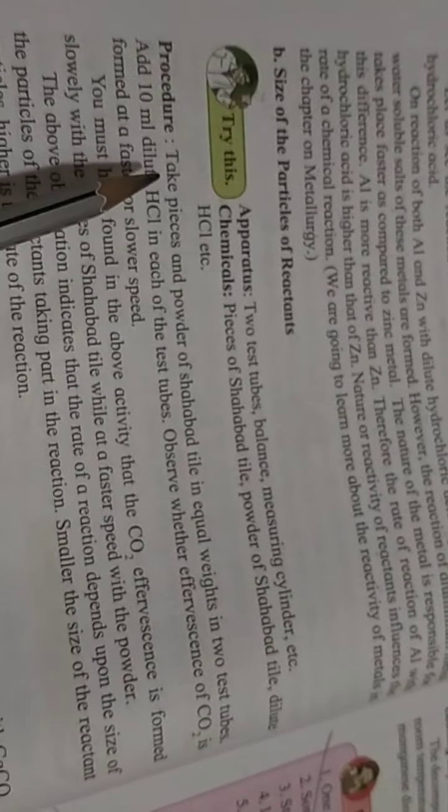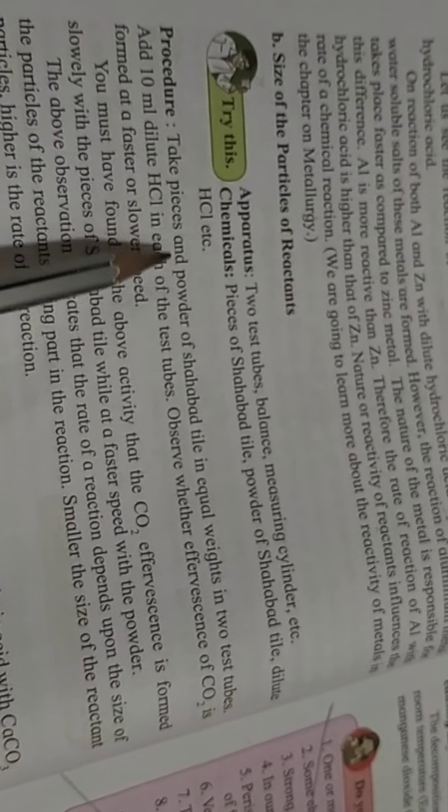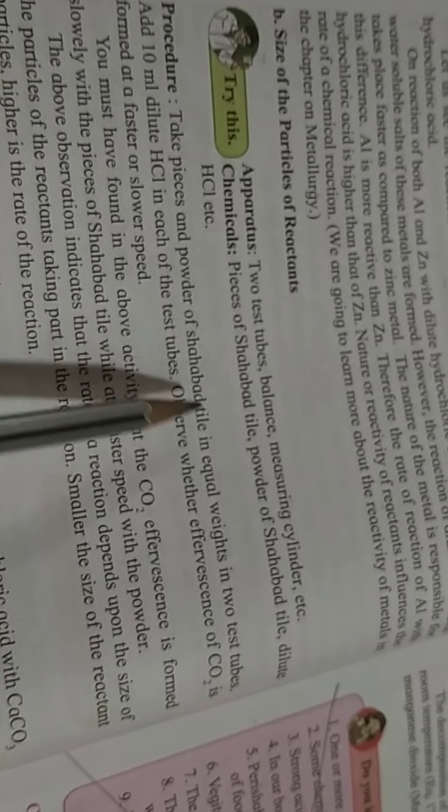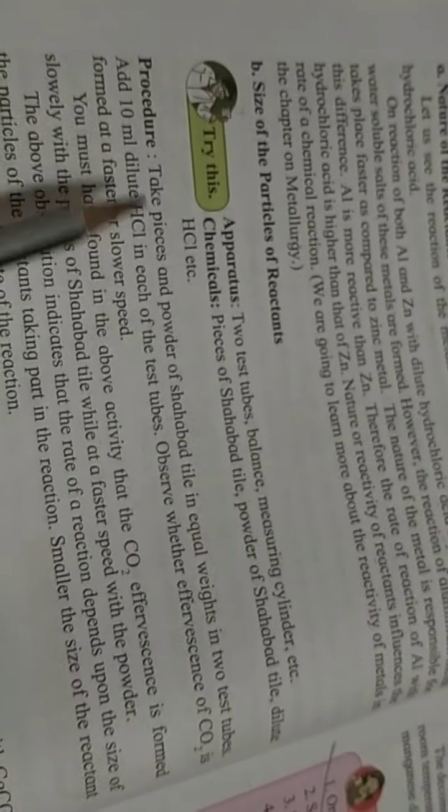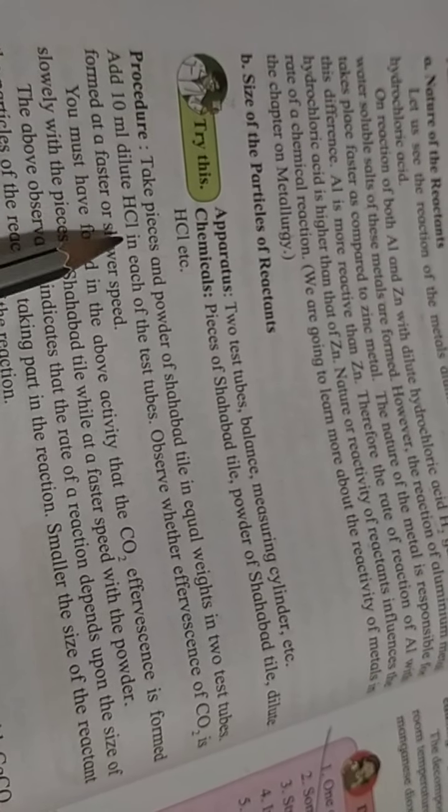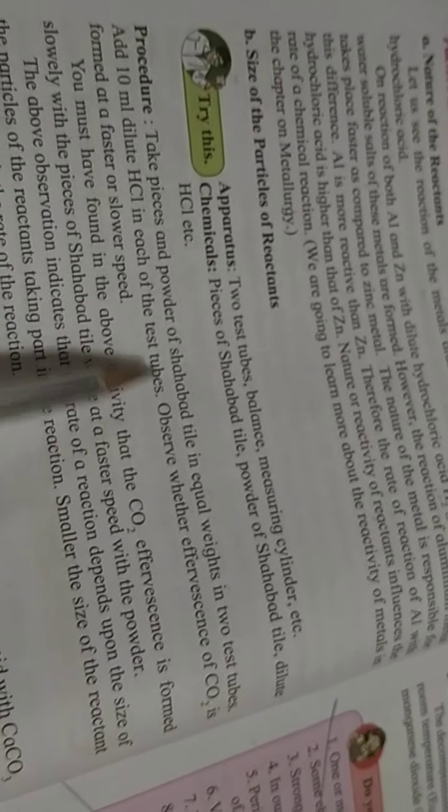Size of the reactant. Take a piece or powder of sabat tiles in equal weight into test tubes. Add dilute hydrochloric acid, 10 ml hydrochloric acid in each test tube.